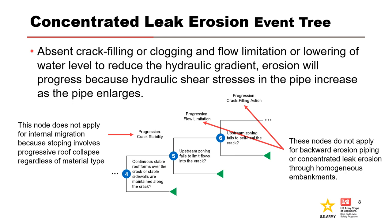For concentrated leak erosion, absent crack filling or clogging and flow limitation, or lowering of the water level to reduce the hydraulic gradient, erosion will progress because hydraulic shear stresses in the pipe increase as the pipe enlarges. The likelihood of progression for concentrated leak erosion through the embankment usually considers three nodes: holding a roof, upstream flow limitation, and crack filling action. Two are related to the mechanical condition, and one is related to the hydraulic condition. All three nodes appear in some generic internal erosion event trees, but they are usually worded to only apply to concentrated leak erosion in zoned embankments.